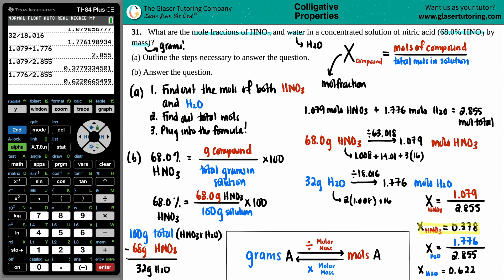So, the mole fraction for HNO3 is 0.378, and the solvent, H2O, is 0.622, and since we've found out the mole fractions for both components, and all the components of the solution, if you add up 0.378 and 0.622, you should get what number? It is 1. If you add up all the fractions, it should equal 1, which is the same as 100%. So, we did it correctly.